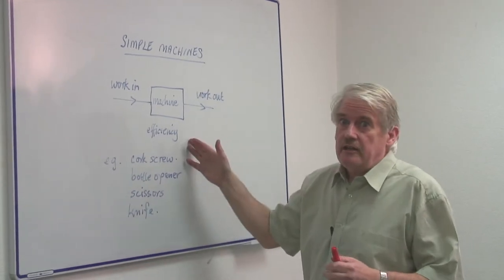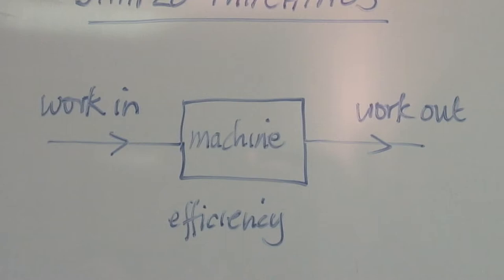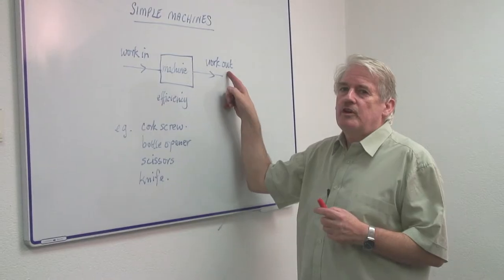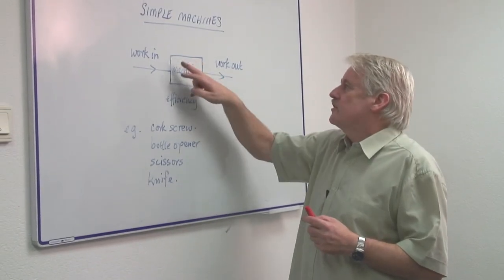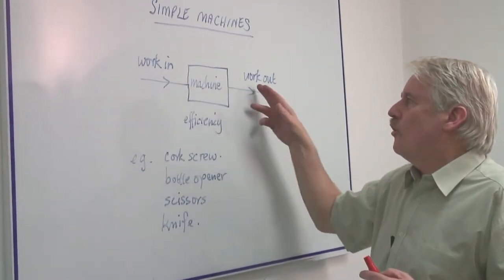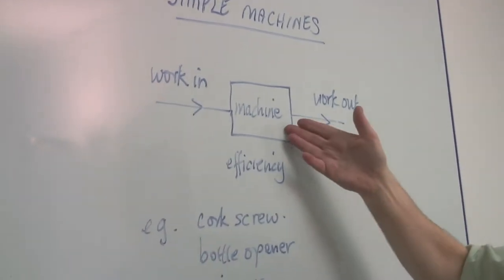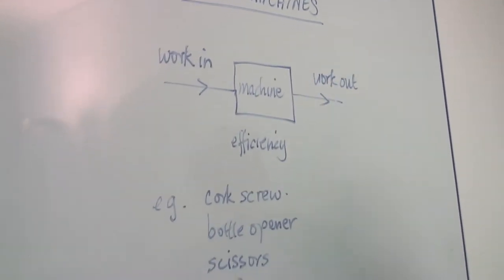Well, any machine is basically a device in which you put work and you get a different type of work out. And the machine will have a certain efficiency. In other words, you can't get all of the work out that you put in. You lose some in the machine. The machine gets hot.